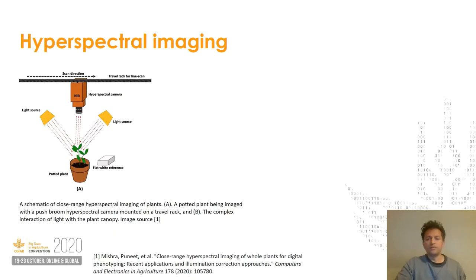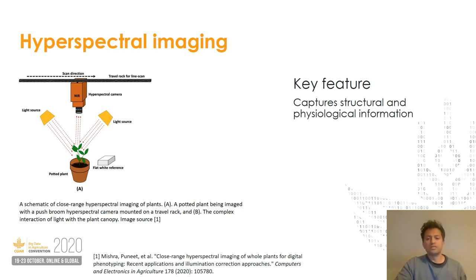Digital plant phenotyping with commonly used tools like cameras and 3D sensors allows you to capture structure and color information. Hyperspectral imaging allows you to extract structural as well as physiological traits of the plants simultaneously. That's why there is such excitement about the technology and the reason why we are exploring it in the current project.